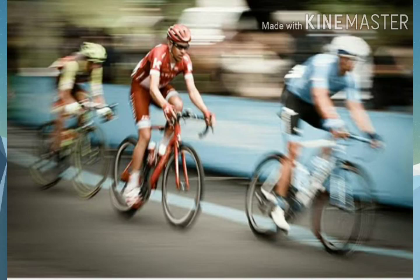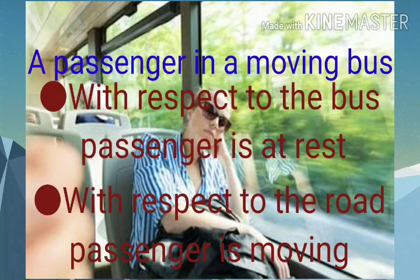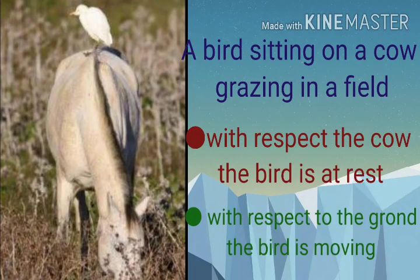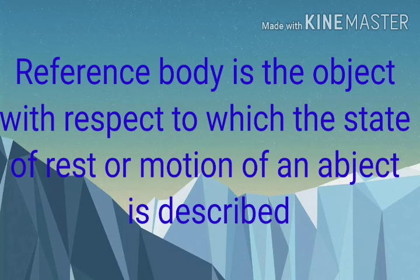Let us see. Consider a passenger in a moving bus. What about the position of the passenger? Compared to the bus, the passenger is at rest. But compared to the road, the passenger is moving. Next example: a bird is sitting on a cow grazing in a field. Compared to the cow, the bird is sitting. But compared to the field, the bird is moving. That is, motion means position changes, and it can be stated only with reference to another object. Motion is relative.